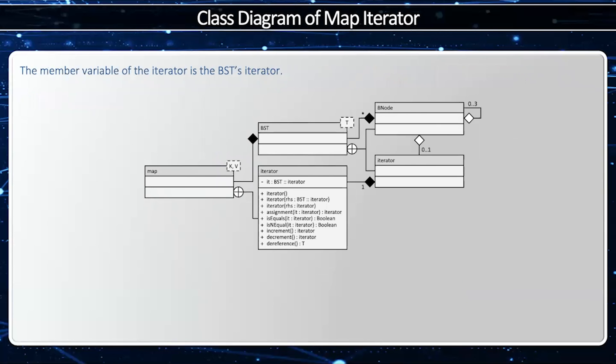So let's take a closer look at the map's iterator. First, we're going to look at the BST iterator. The BST iterator has one or two references to the B node, like we mentioned previously. The map iterator is going to have exactly one instance of a BST iterator. Notice how we have a member variable IT, which is a BST iterator. And the map iterator, of course, is a nested class within map.